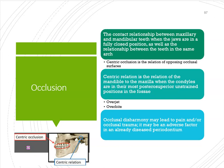Another thing we always document in the hard tissue section is occlusion. Centric occlusion is when the jaws are fully closed — the relationship of the maxilla to the mandible in a fully closed position. Centric relation is when you're looking at the jaw placement — specifically the condyle placement — looking at how the mandibular and maxillary jaws are positioned.